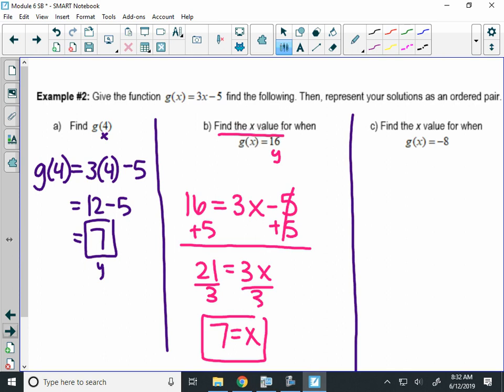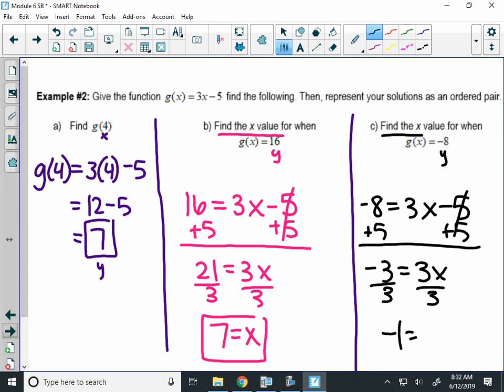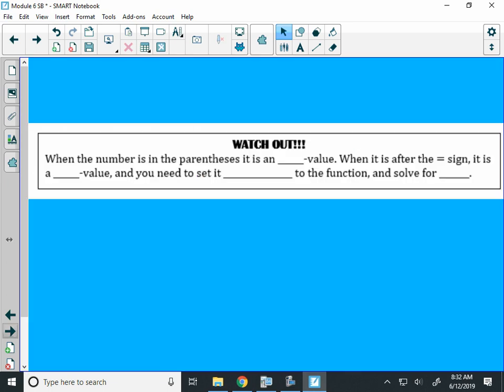Alright, part C, same thing. Find the x value for g of x is negative 8. Well, that negative 8 is a y value again. So, I'm going to set it equal to your function. And I'm going to solve that function for x. So, negative 3 equals 3x. And that tells me negative 1 is the input I was looking for. That's the trickiest part, B and C. I have to watch out. When the number is in the parentheses, it's an x value. When the number is after the equal sign, it's a y value. And you need to set that number equal to the original function and solve for x. So, what we just did, that's important. It's something that people forget very often.